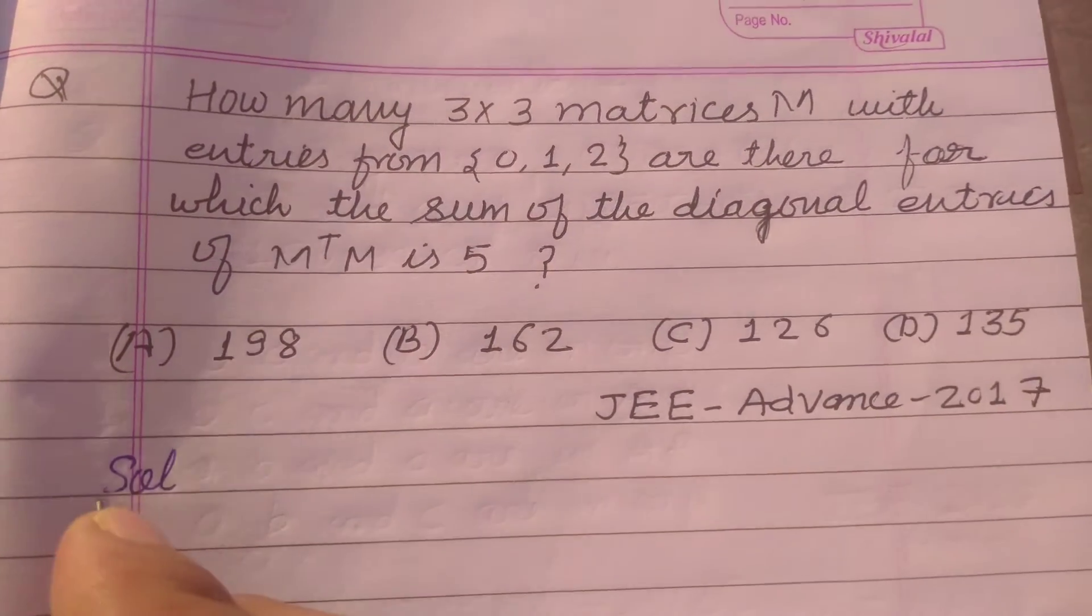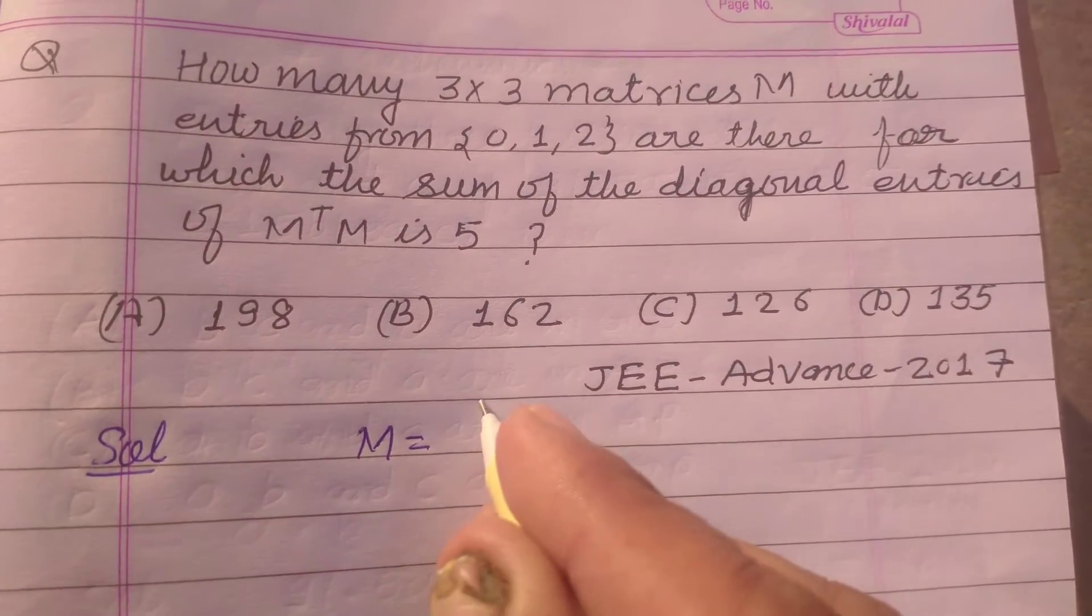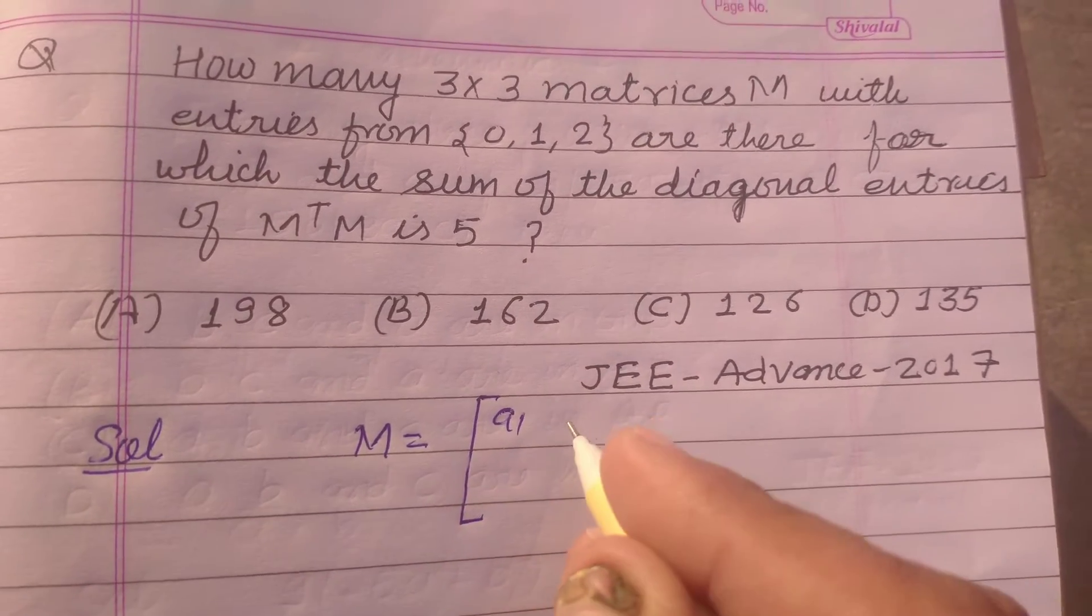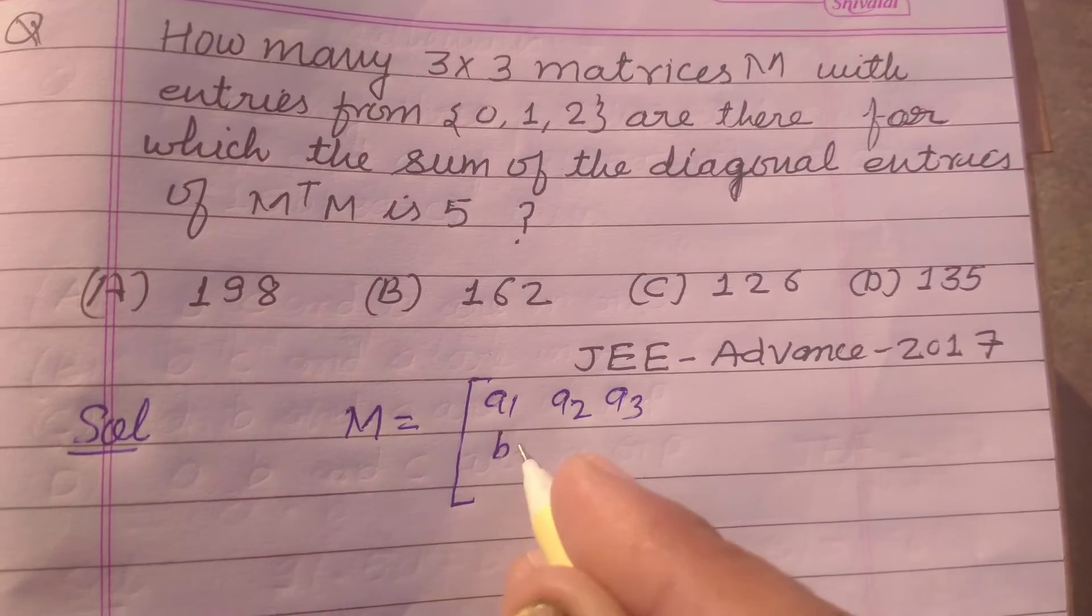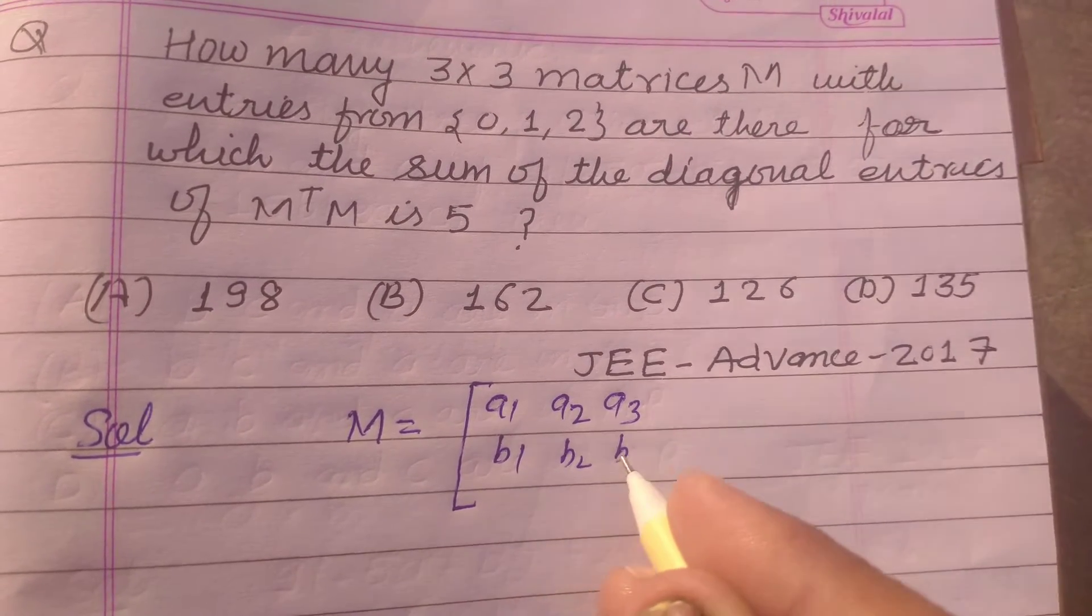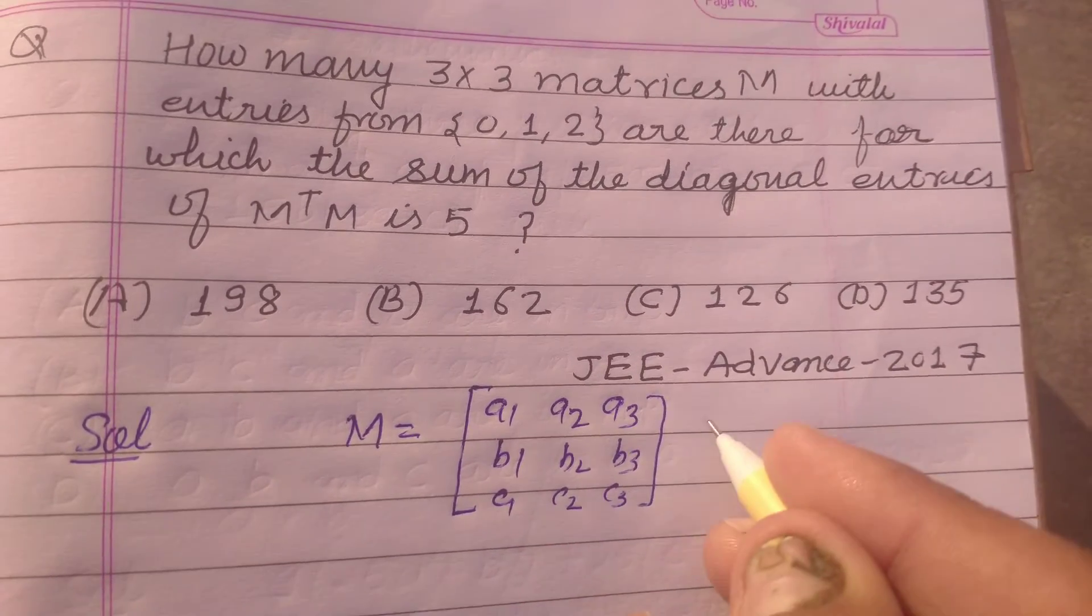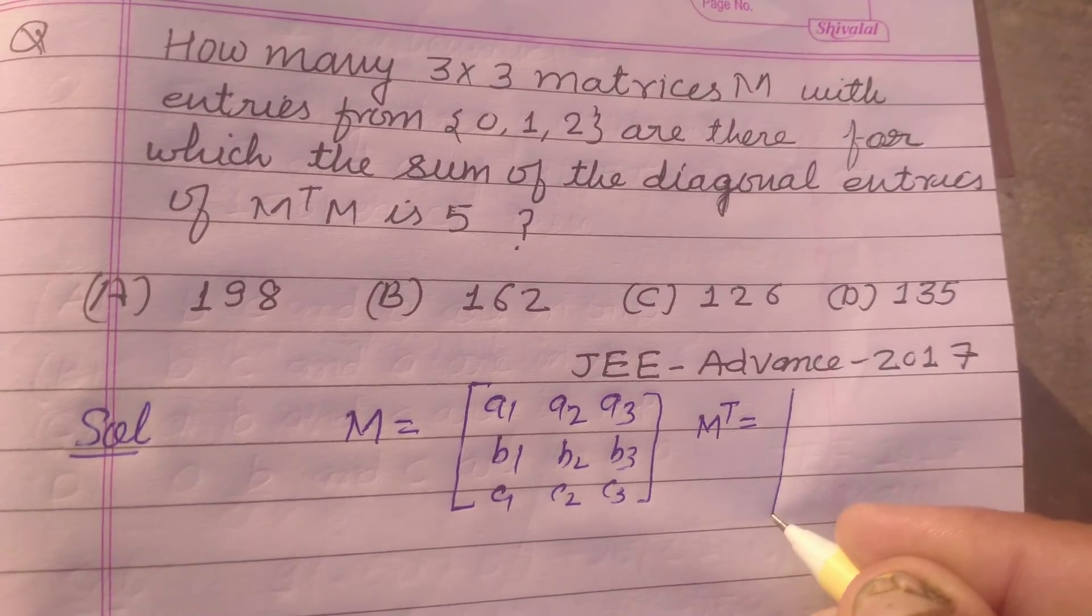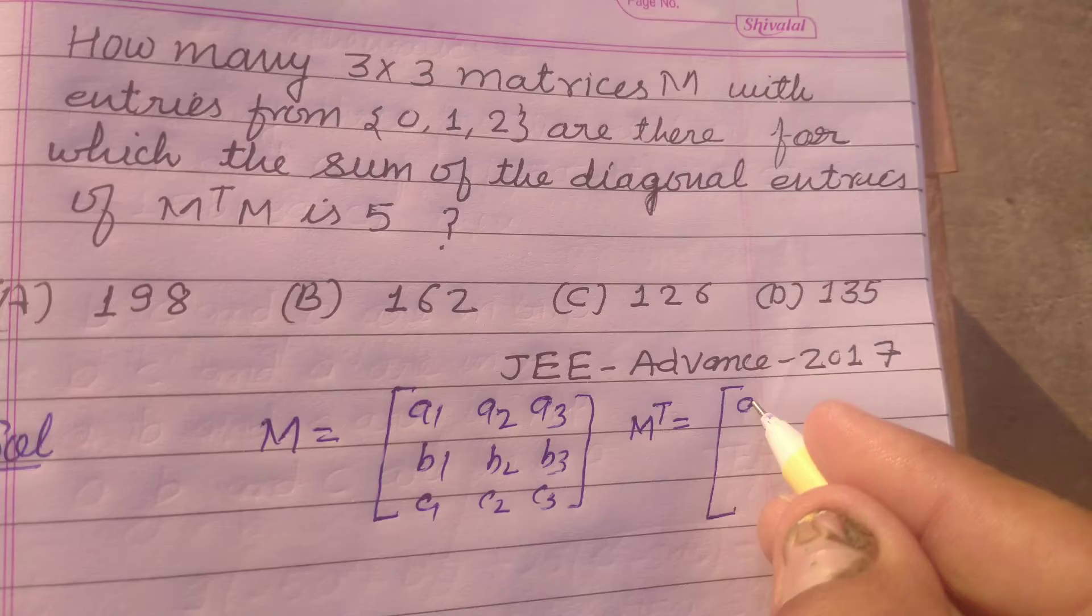So student, first we take a matrix M of three entries: A1, A2, A3, B1, B2, B3, C1, C2, C3.